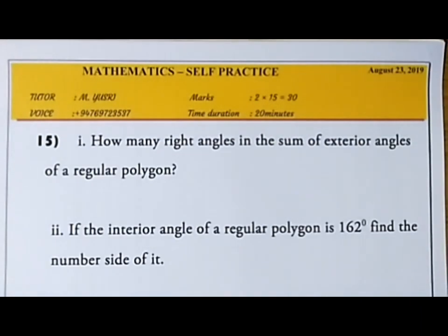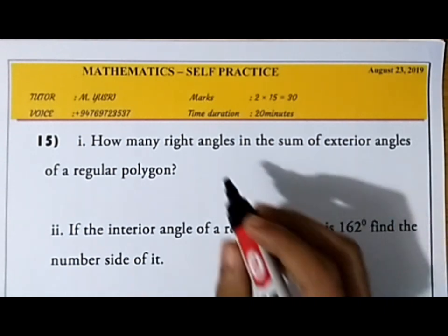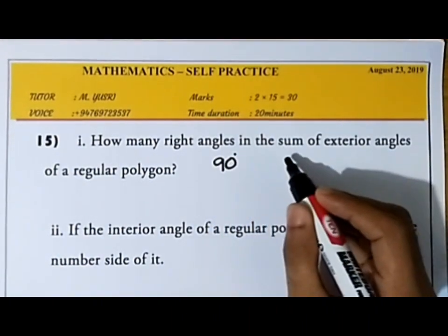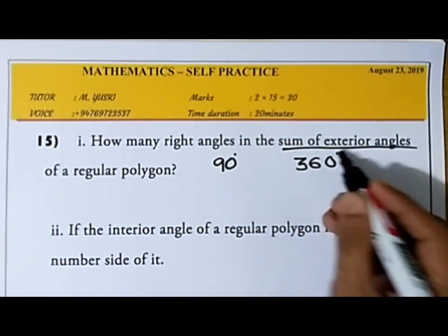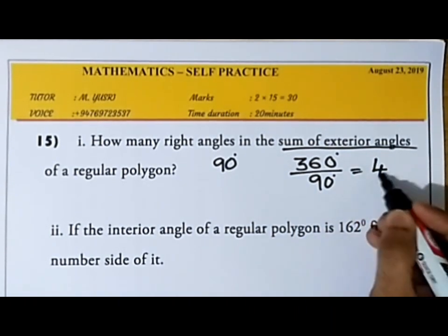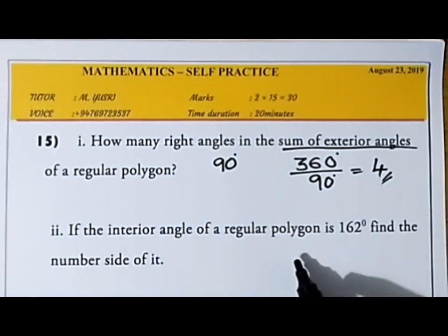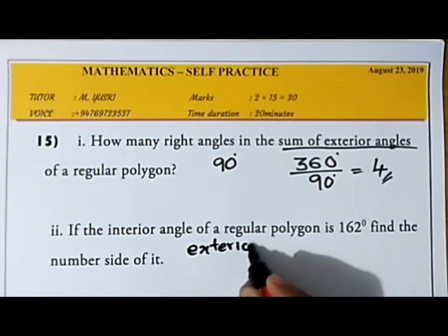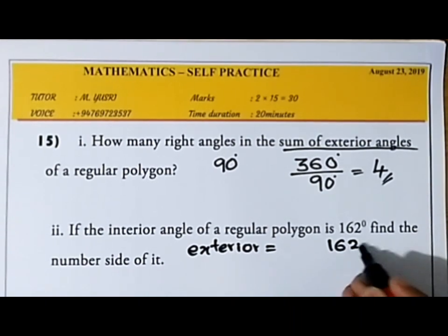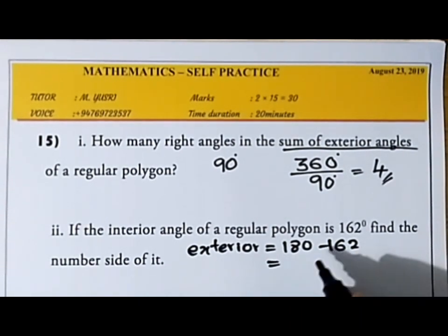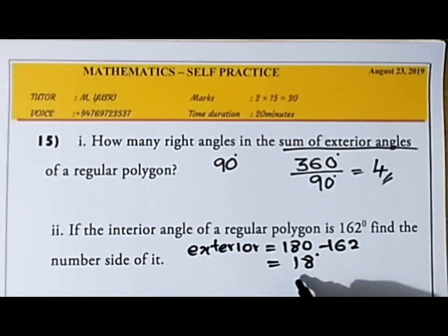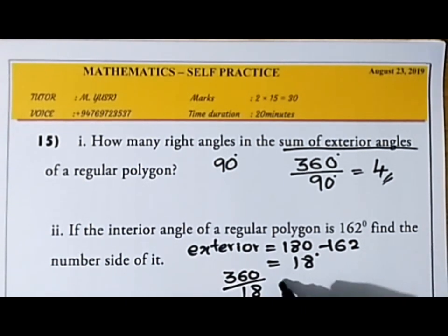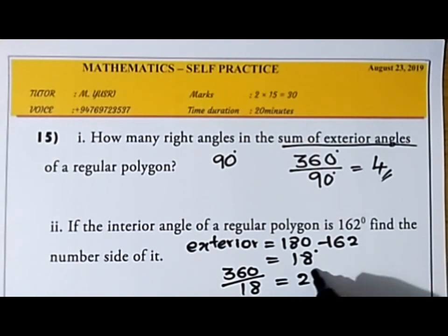How many right angles are in the sum of exterior angles of a regular polygon? The sum of exterior angles is 360°. A right angle is 90°, so 360 ÷ 90 = 4 right angles. In part two, if the interior angle of a regular polygon is 162°, find the number of sides. The exterior angle = 180 − 162 = 18°. Number of sides = 360 ÷ 18 = 20 sides.